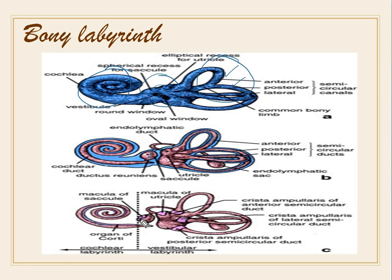This is the macula of the saccule and the macula of the utricle. These are the crista ampullaris of the anterior semicircular duct, and similarly for the lateral and the posterior semicircular ducts.